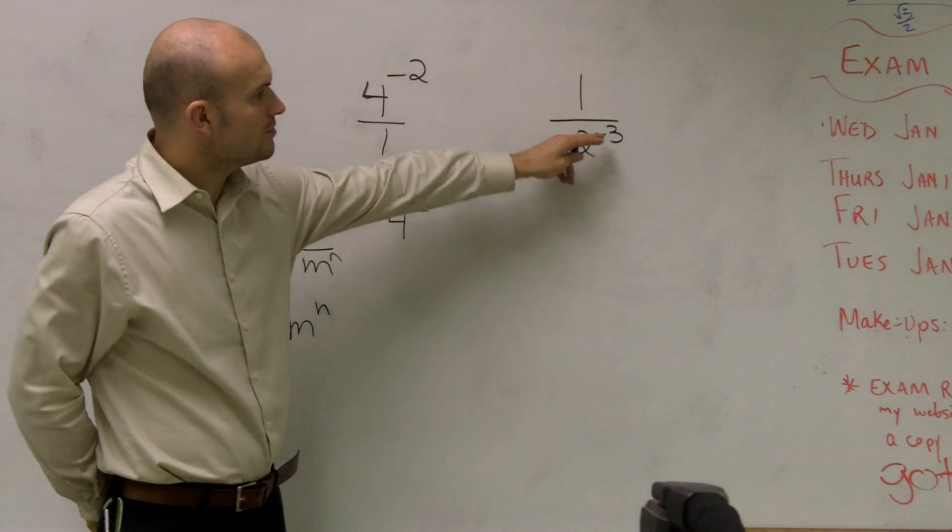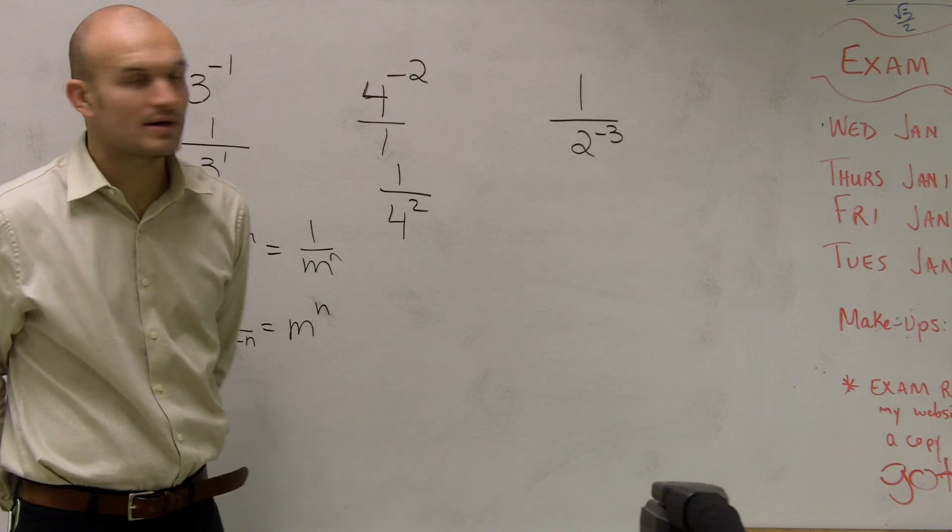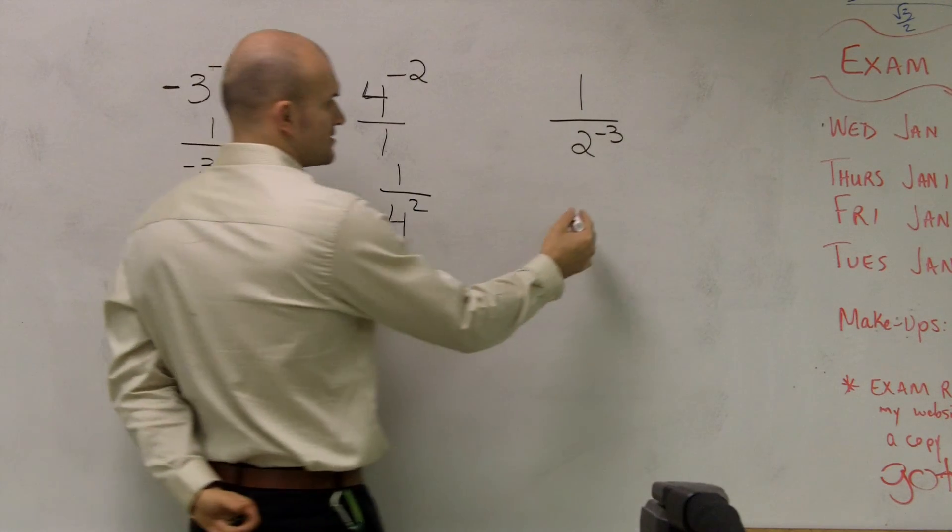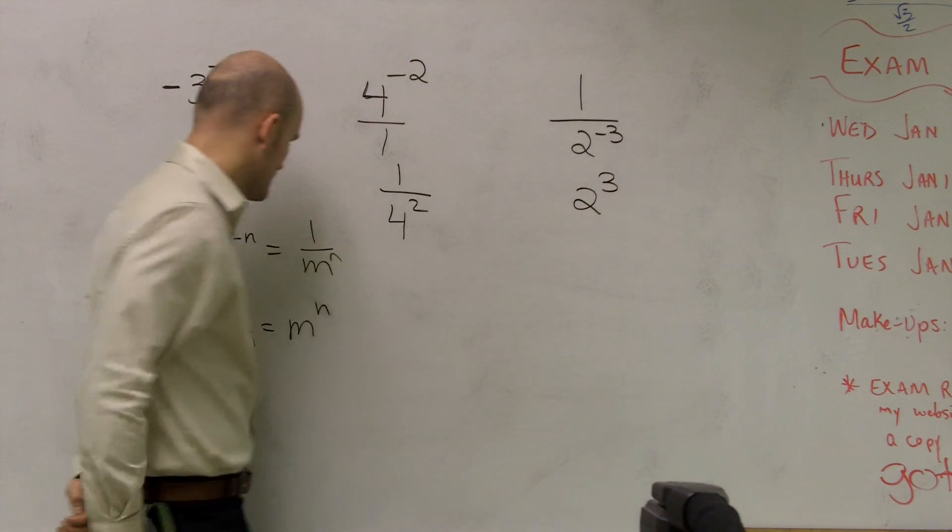And that works to the contrary. If I have 2 to the negative third power, to put that up front, I can now say that it's going to be 2 to the positive third power.